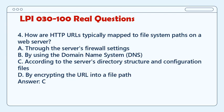Question 4. How are HTTP URLs typically mapped to file system paths on a web server? A. Through the server's firewall settings. B. By using the Domain Name System, DNS. C. According to the server's directory structure and configuration files. D. By encrypting the URL into a file path. Answer: C.